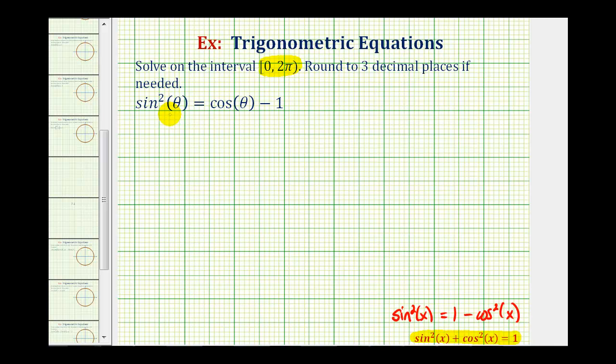Which means for our equation, we can substitute one minus cosine squared theta for sine squared theta. So, we'll have one minus cosine squared theta equals cosine theta minus one.